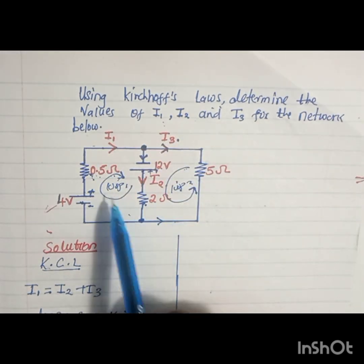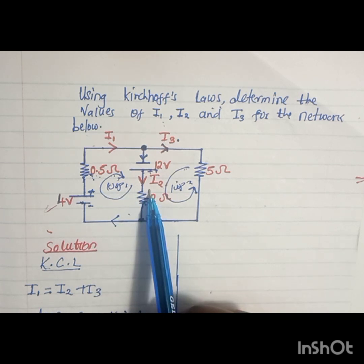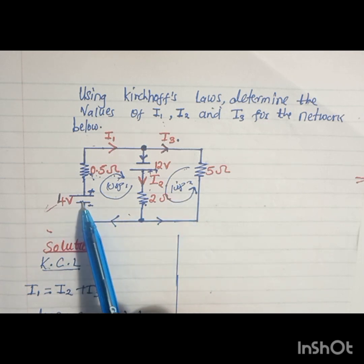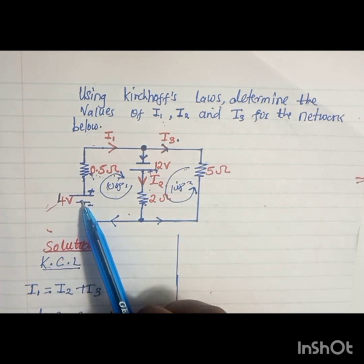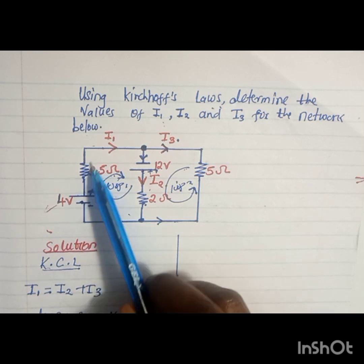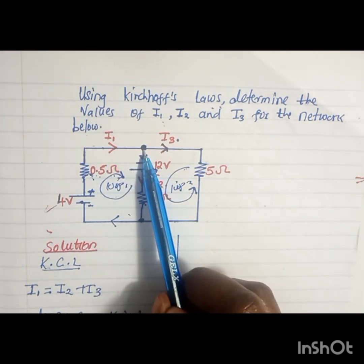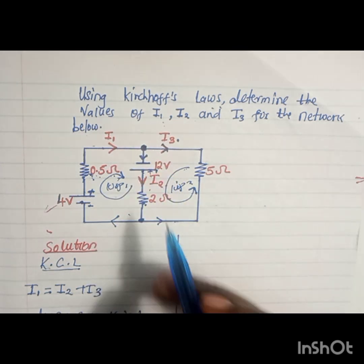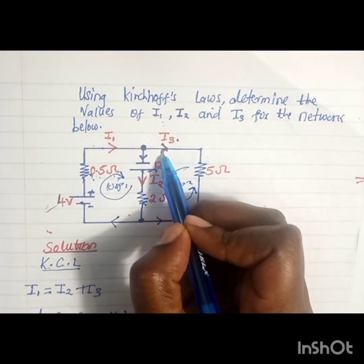So this is our network here, and you can see we have two loops - loop one and loop two. When you consider this source, we will have current flowing from the positive terminal up to this junction. When we reach this junction, we have some current passing through this path and some other current following the other path.